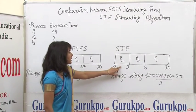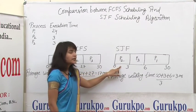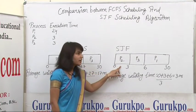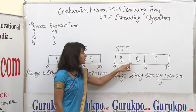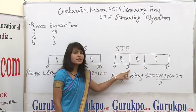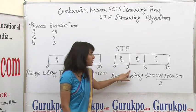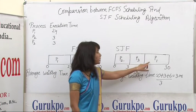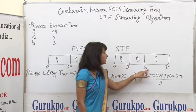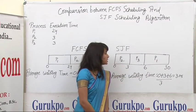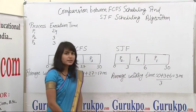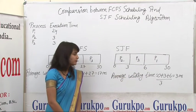P2 gets the CPU at time 0 milliseconds, then P3 gets the CPU after 3 milliseconds, and P1 gets the CPU at 6 milliseconds.